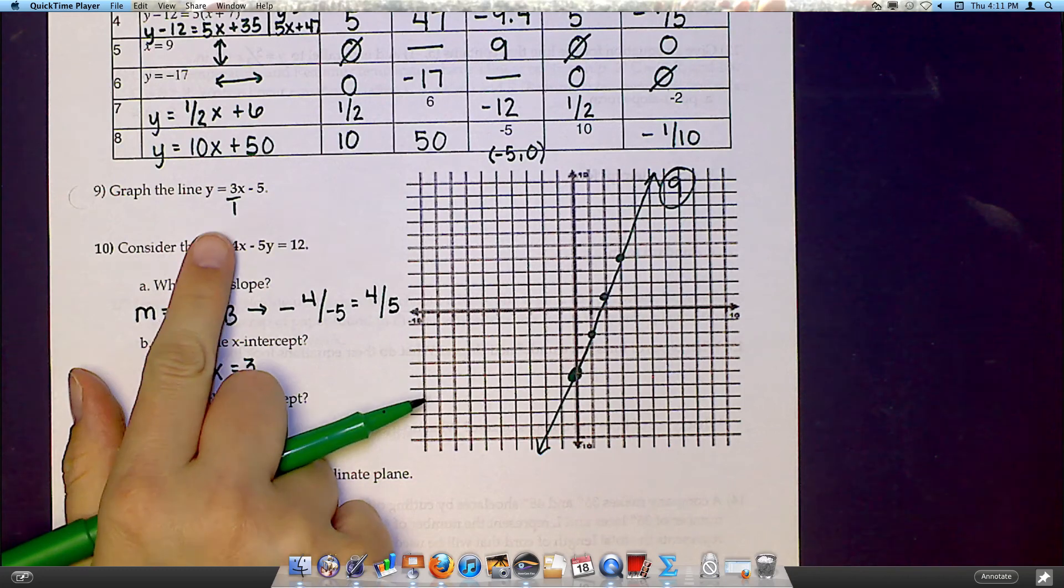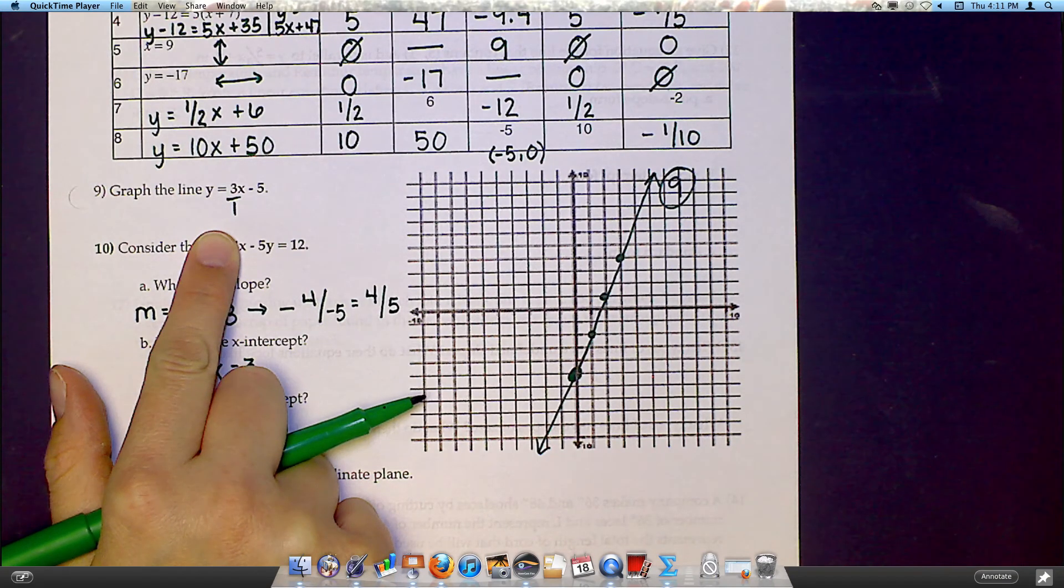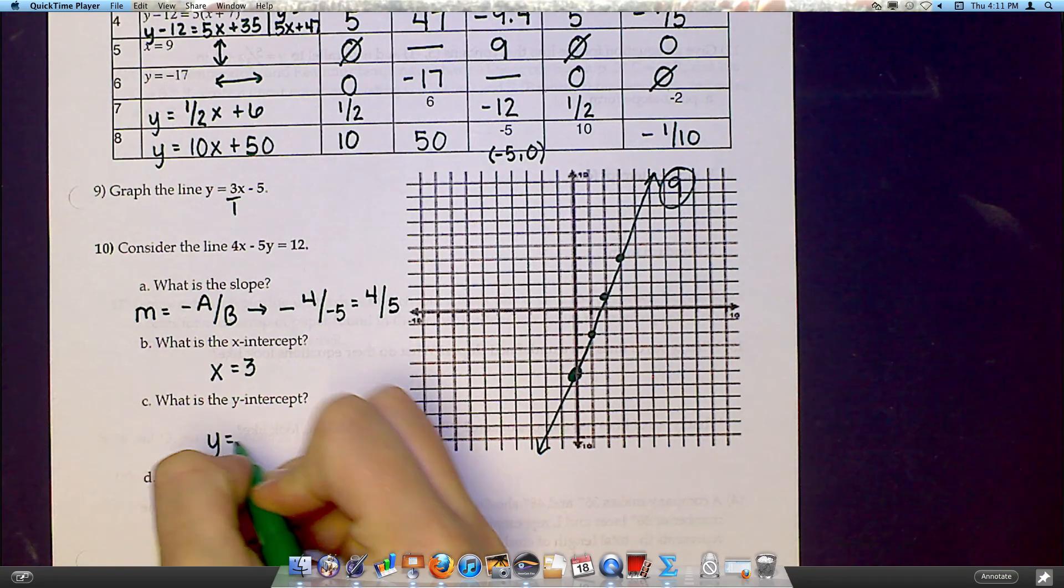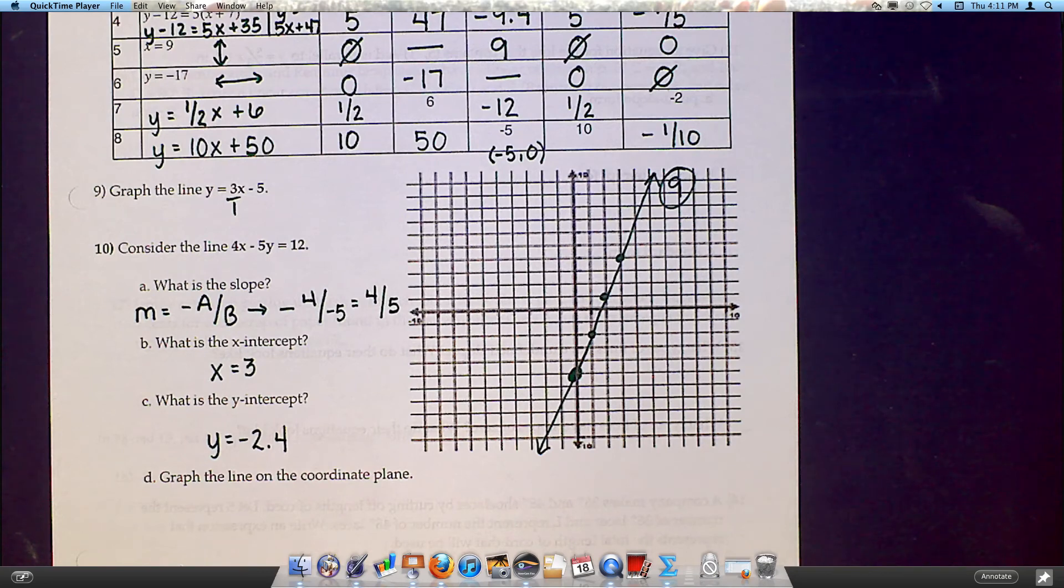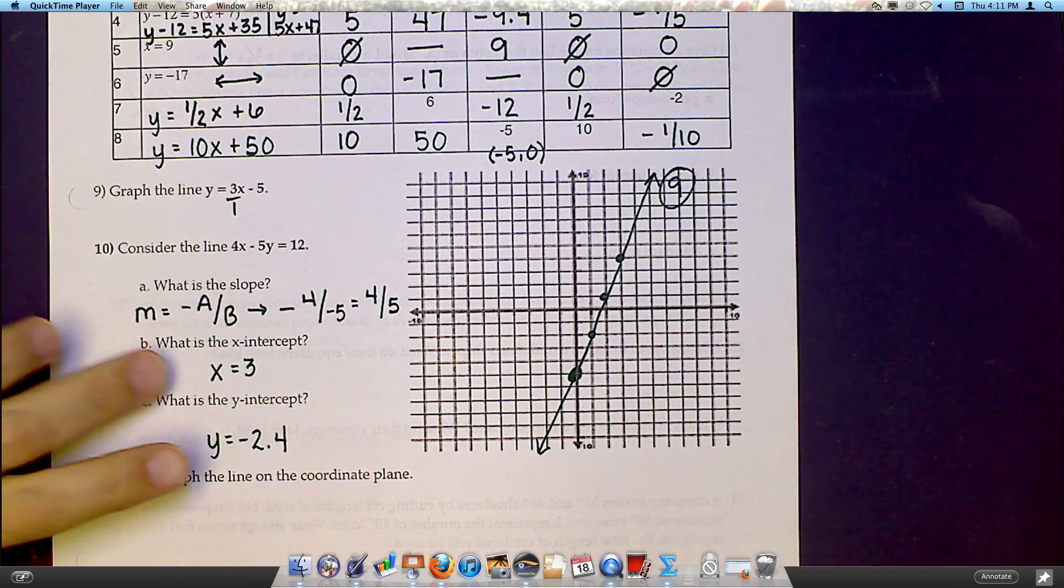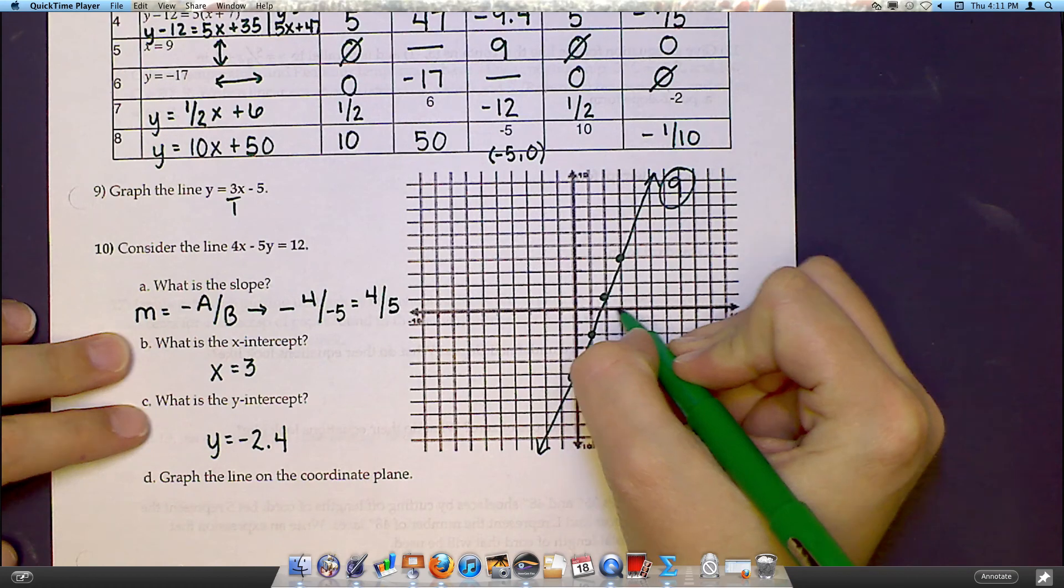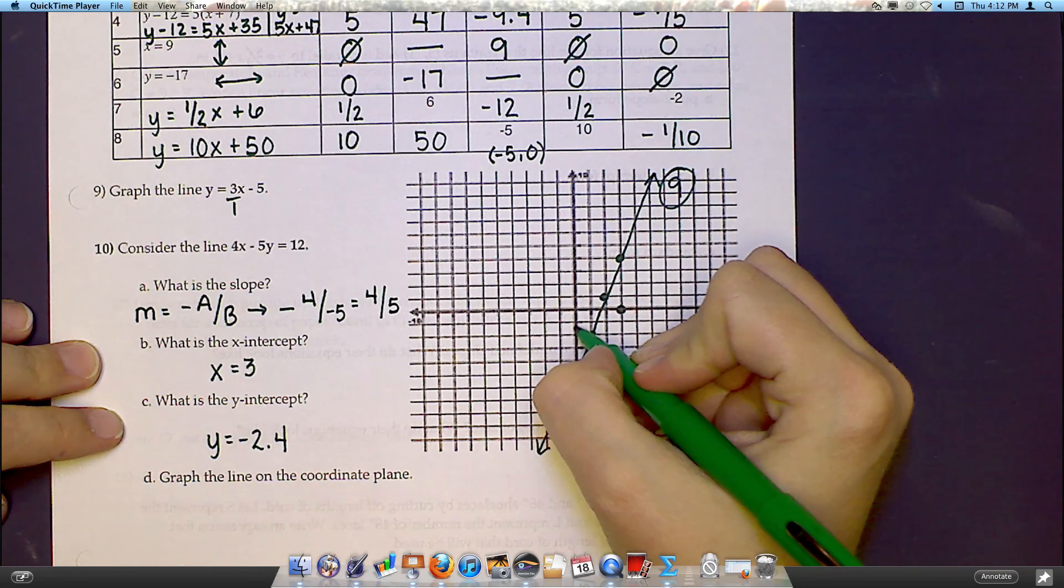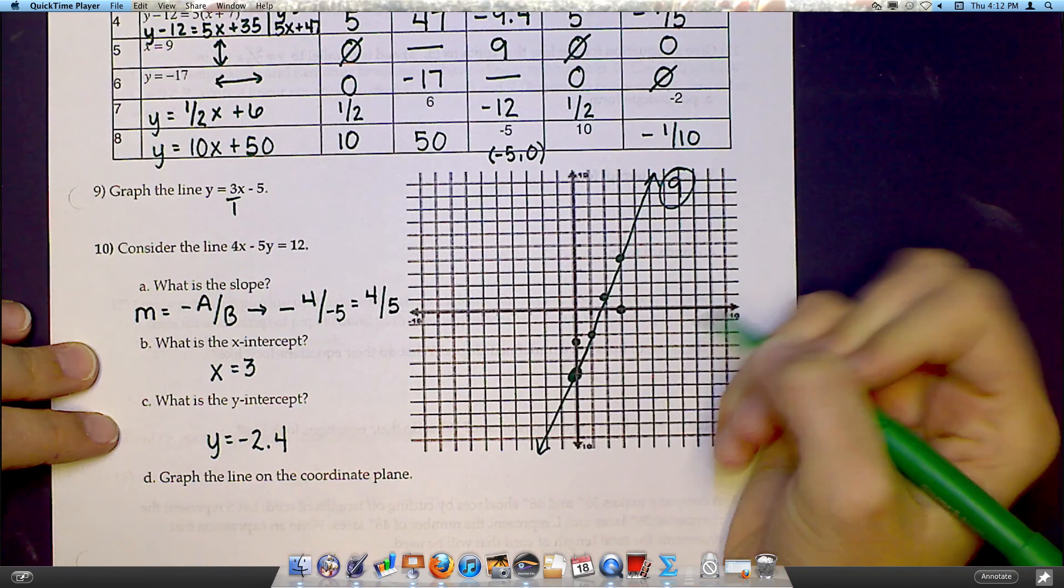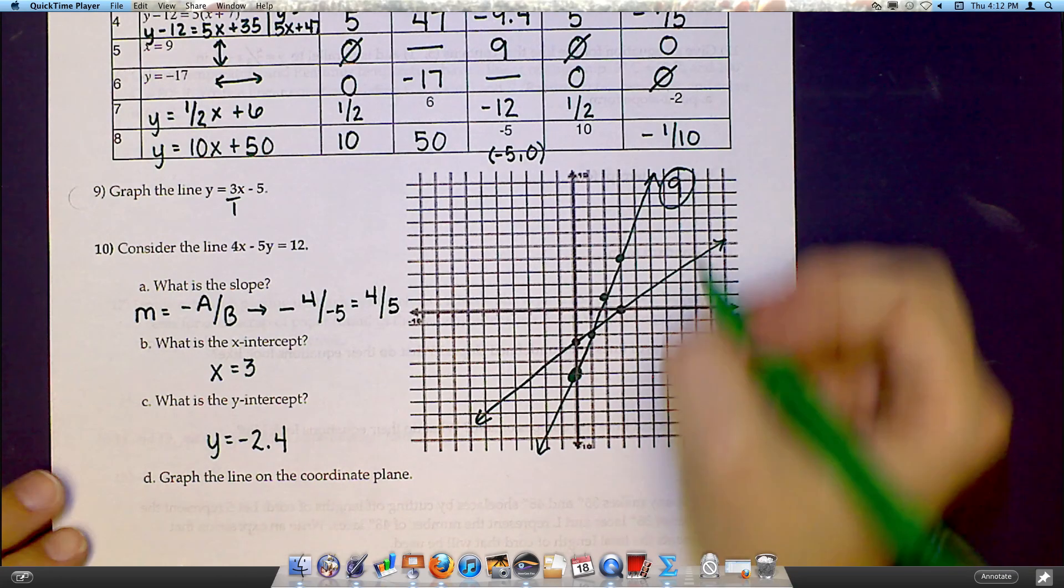My y-intercept is when I cover up the x. So I end up with negative 5y equals 12. When I divide 12 by negative 5, I get negative 2.4. Now it's asking you to graph. I could do it the same way I did the other one, and then I would start at my y-intercept and then I would use my slope to figure out where to go from there. But I really think any time you have an x and a y-intercept, that it's easiest just to plot those two points and connect them. So if my x-intercept is 3, that's going to be right here. And my y-intercept is negative 2.4. I know that's a decimal, so it's a little weird, but it's going to be about there. And now I'm just connecting those two dots.